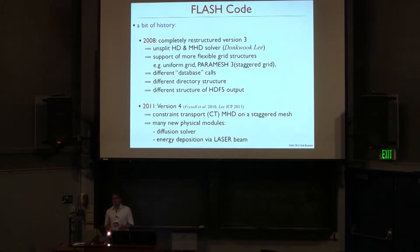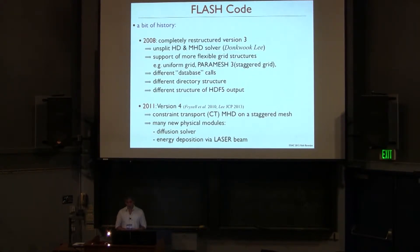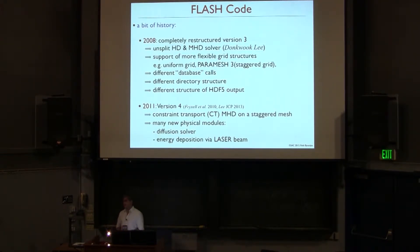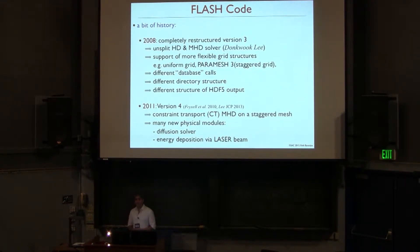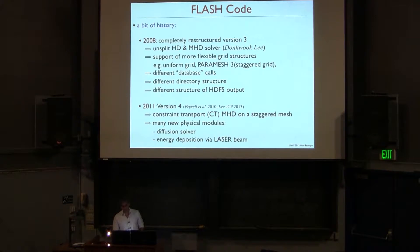The development went on, and by now the Flash version is version 4, which included the constraint transport algorithm and many different physical modules like a diffusion solver and energy deposition with laser beams. So this is where the FLASH code stands right now — it evolved over more than a decade and is a very versatile tool that can be used for many, many purposes.